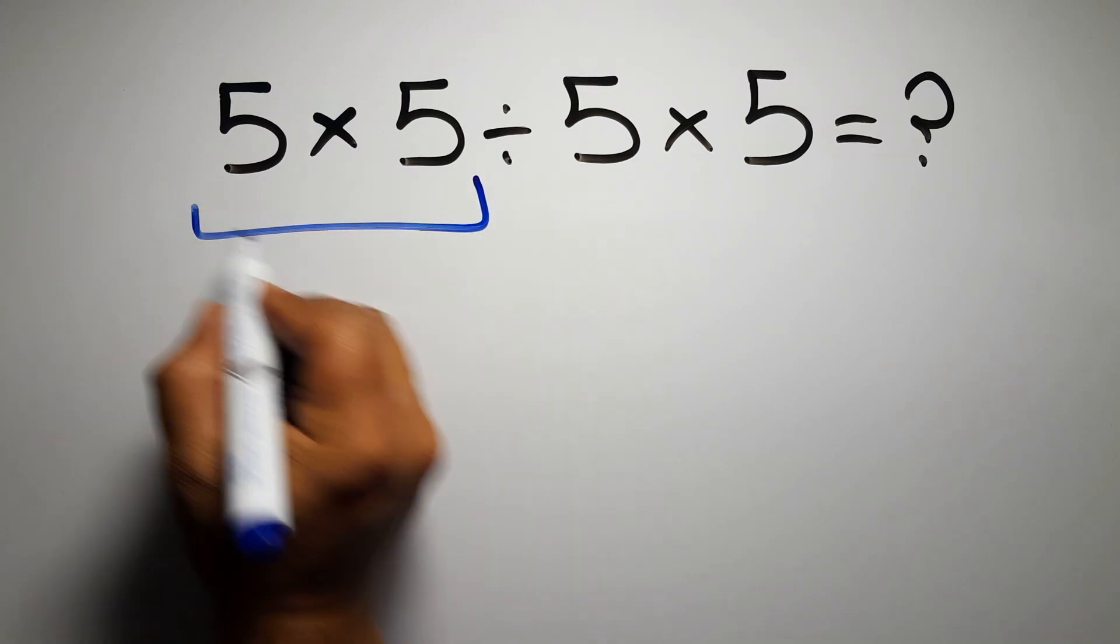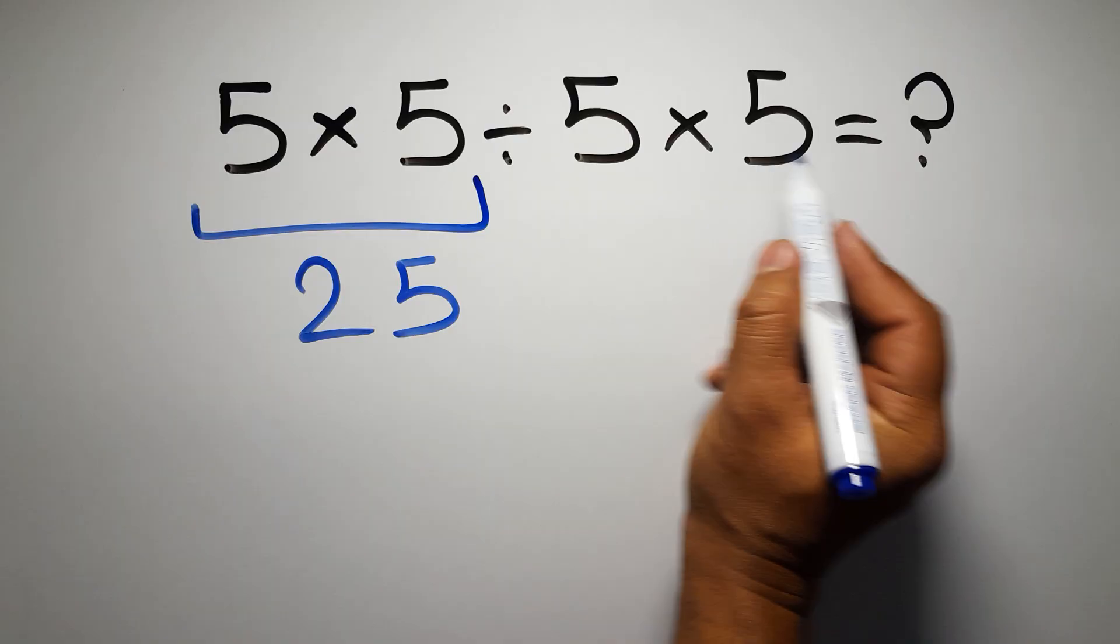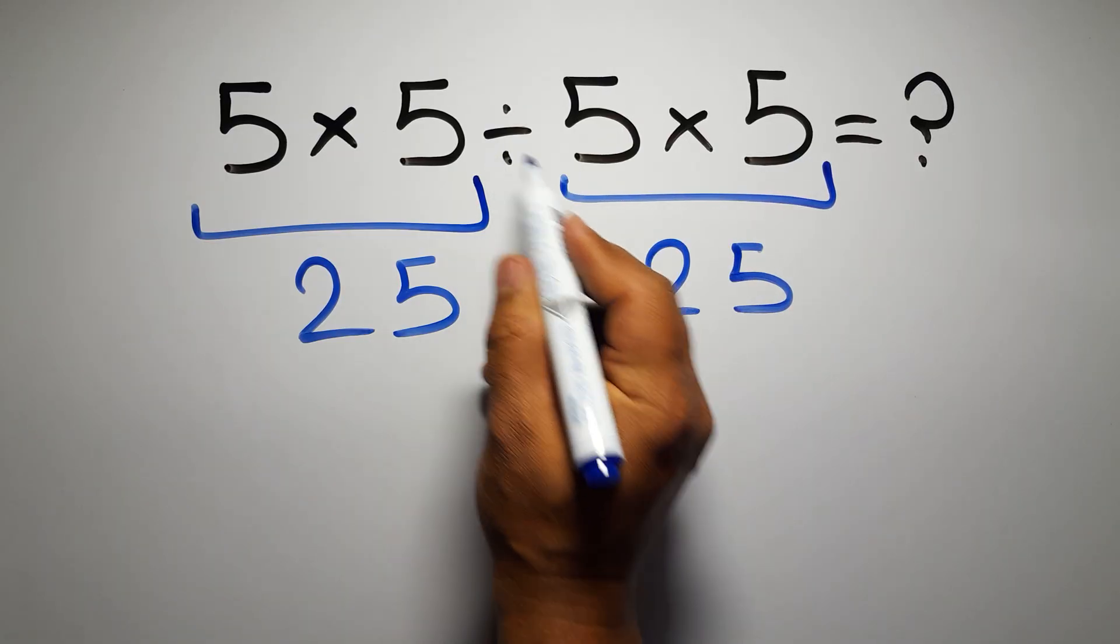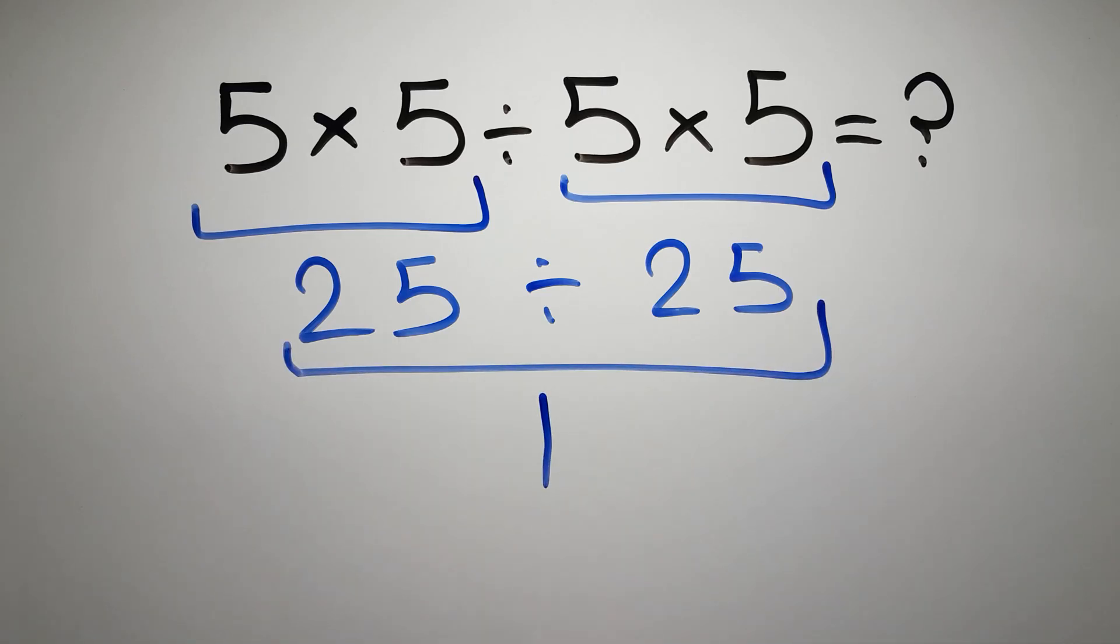5 times 5 gives us 25, and again here we have 5 times 5, so 25 divided by 25, which equals 1. But this answer is not correct.